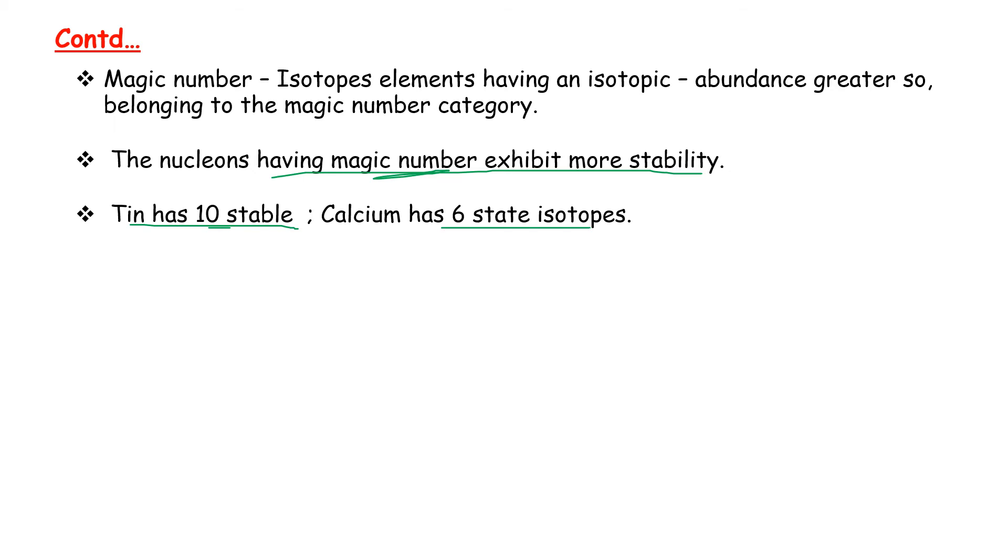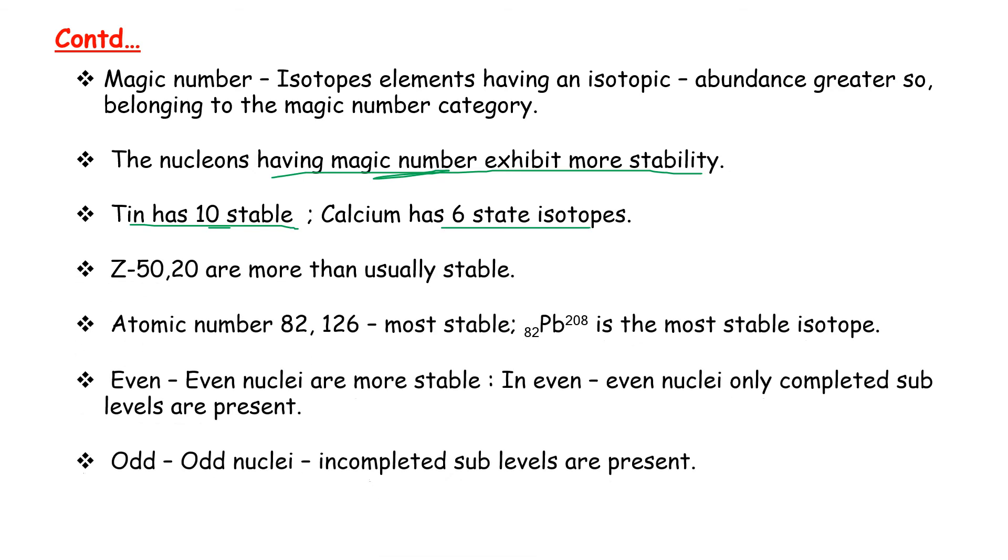Zinc with 50 neutrons and atomic numbers 82 and 126 are more stable. Lead is the most stable isotope.